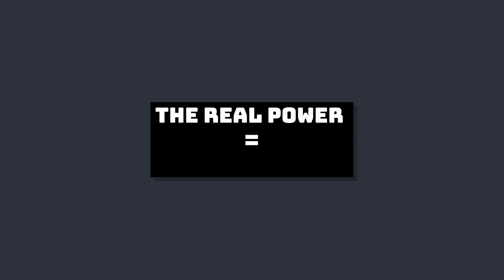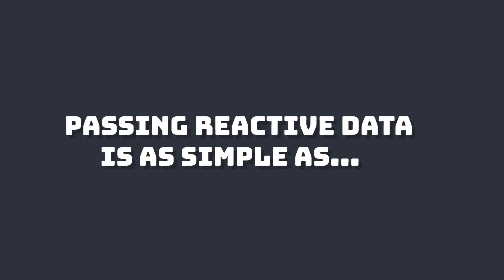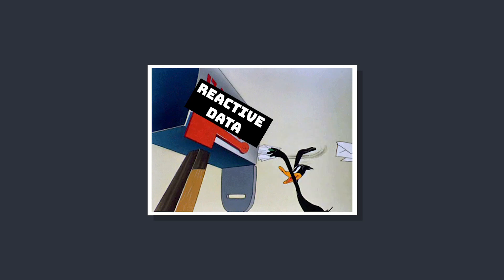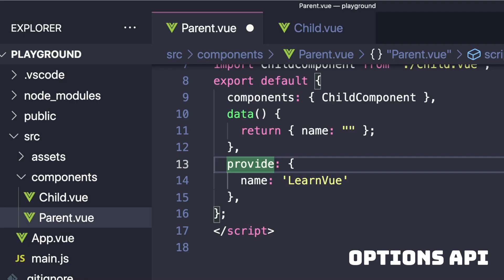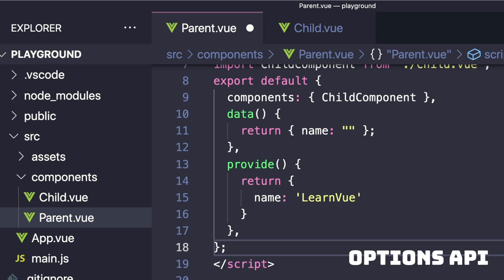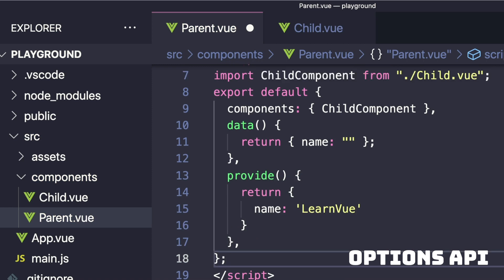The real power of dependency injection can be shown when we start adding reactivity between our two components. Passing reactive data is as simple as creating reactive data and then passing it. We can do that in the Options API by turning our provide into a function so we have access to the this property.